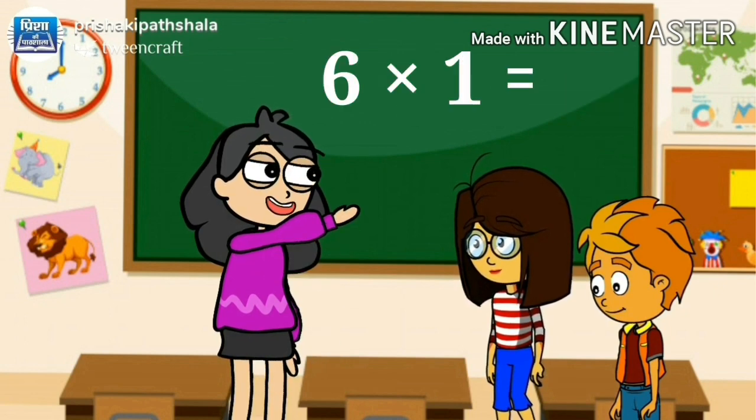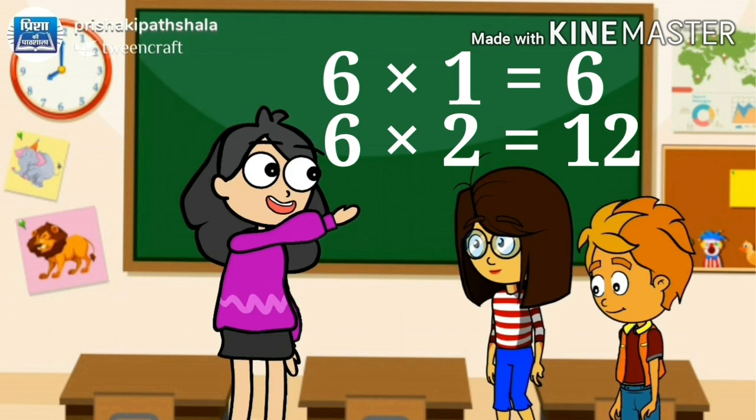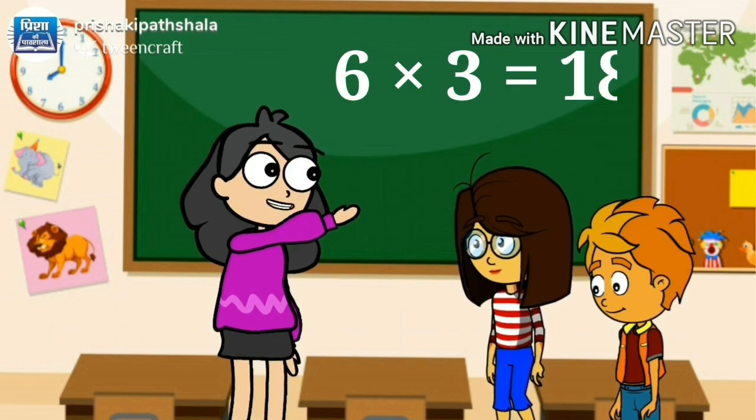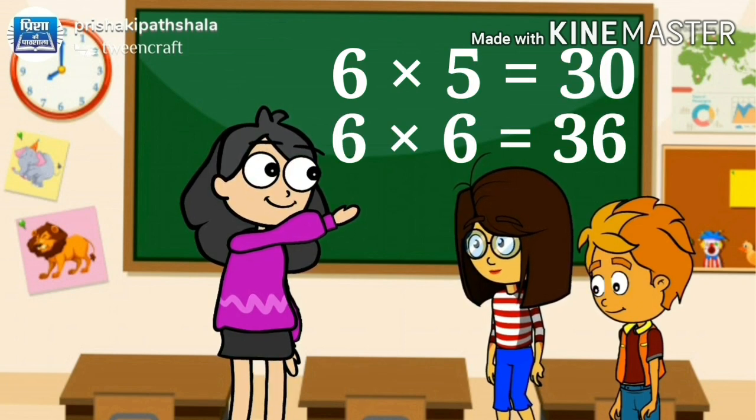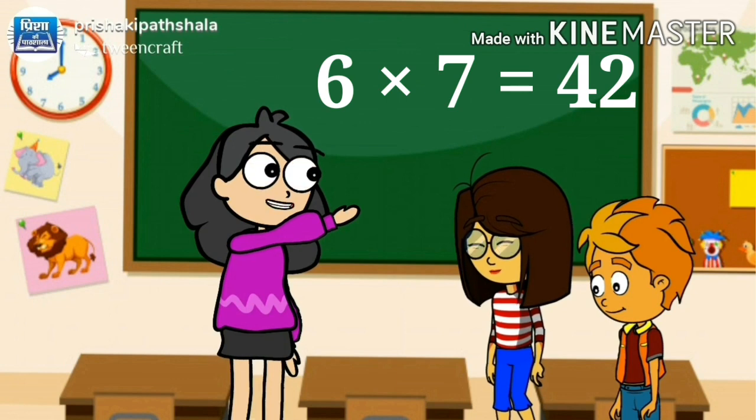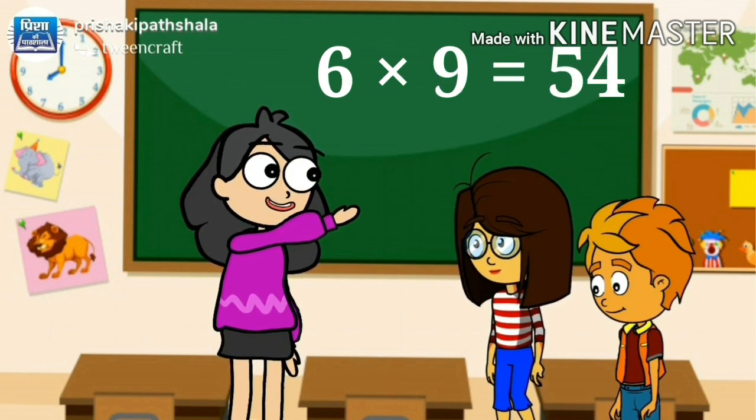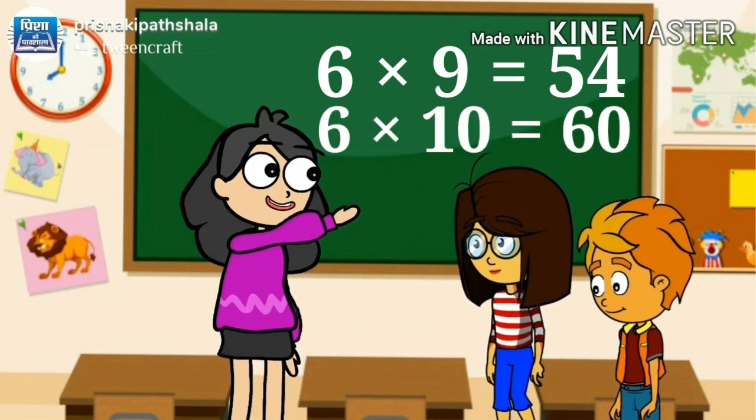6 1's are 6, 6 2's are 12, 6 3's are 18, 6 4's are 24, 6 5's are 30, 6 6's are 36, 6 7's are 42, 6 8's are 48, 6 9's are 54, 6 10's are 60.